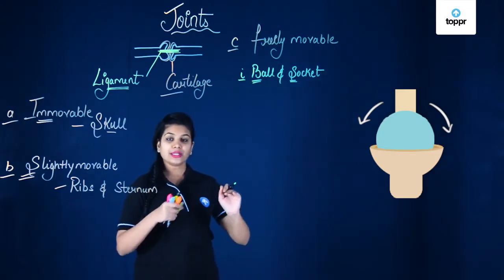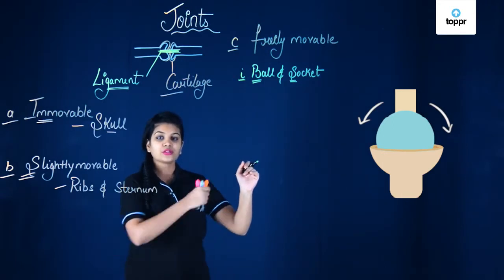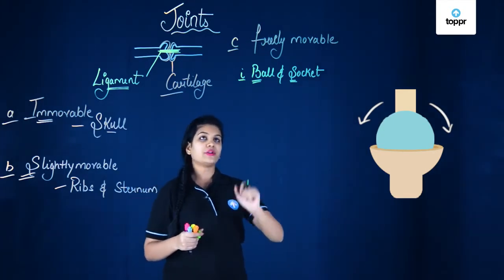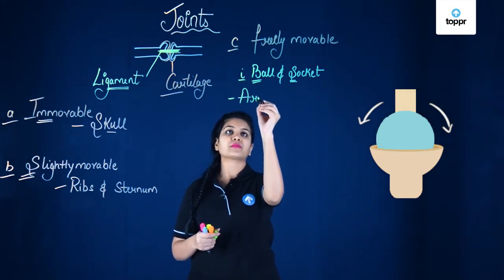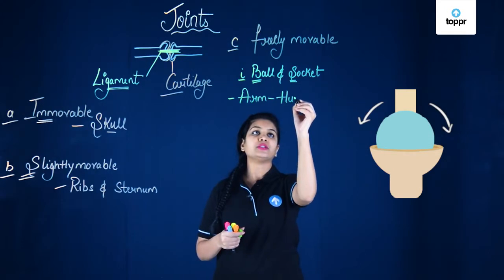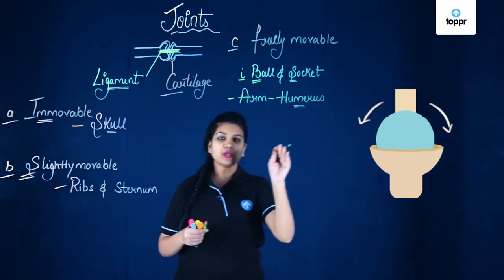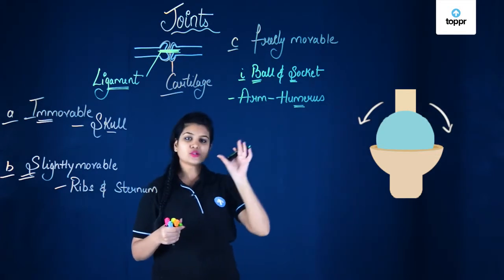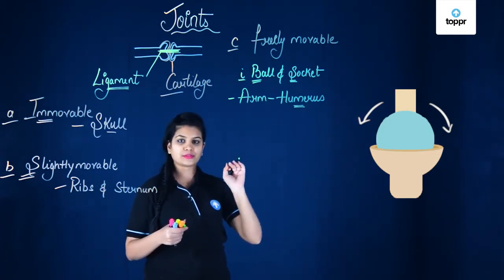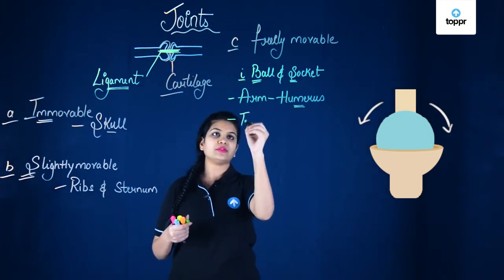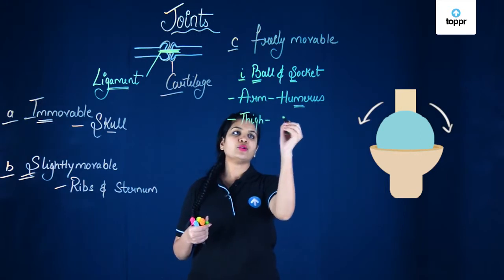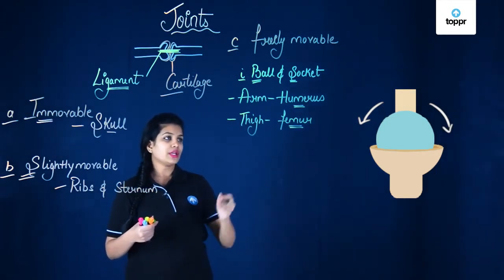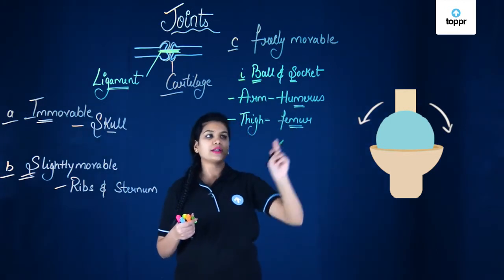The ball and socket joint can be observed in your hand and in your leg. The upper arm can move in all directions because of this joint. In the arm, the bone called the humerus has a ball-like end which gets fitted into a socket in the pectoral girdle, allowing the hand to move in all directions. Similarly in the leg, the thigh bone called the femur gets fitted into the pelvic girdle. These are both examples of ball and socket joints.